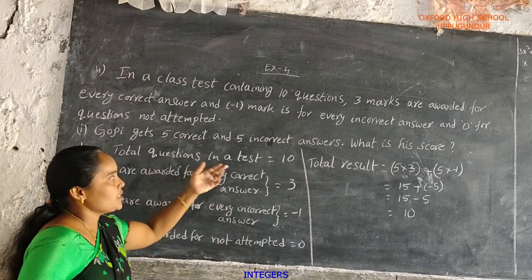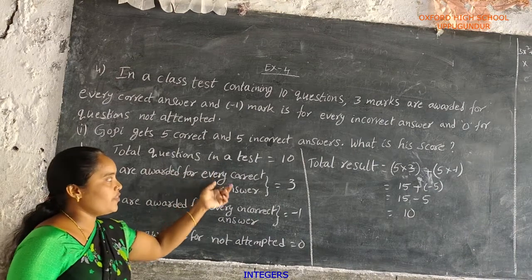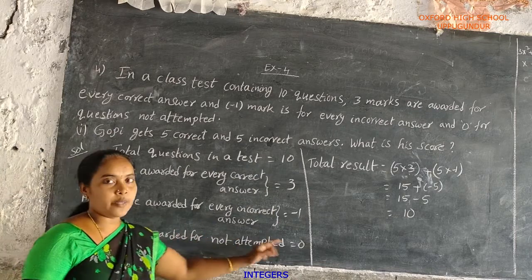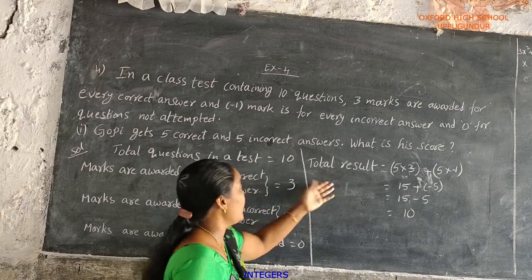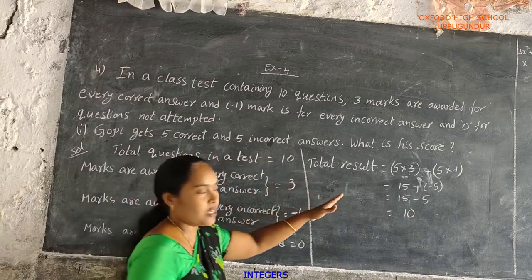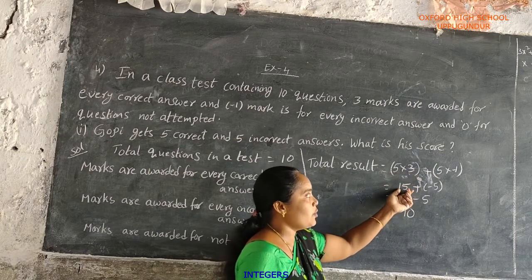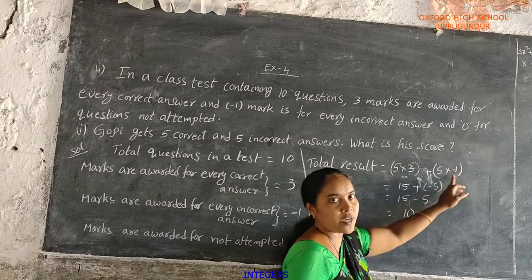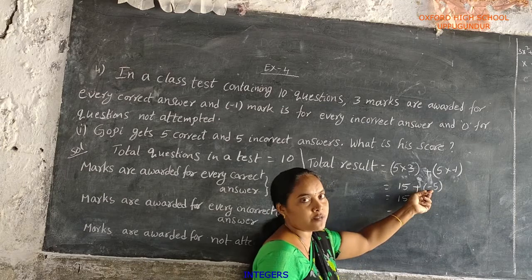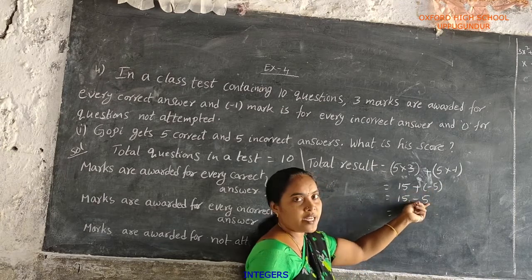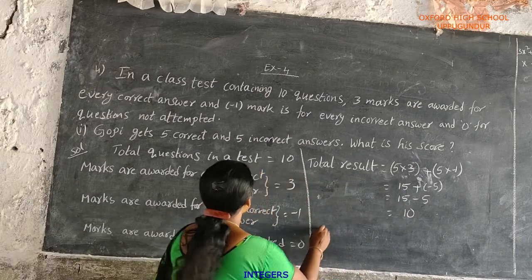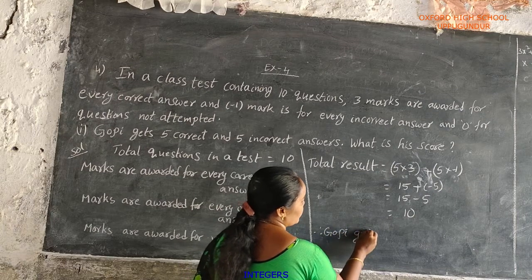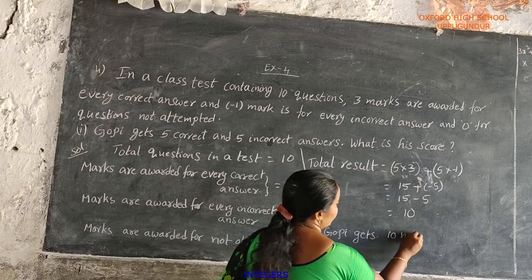Once again: total questions in a test is 10. Marks for every correct answer: 3. Marks for every incorrect answer: minus 1. Marks for not attempted: 0. Gopi gets 5 correct and 5 incorrect answers. Total result equals 5 into 3 plus 5 into minus 1 equals 15 minus 5 equals 10. Therefore, Gopi gets 10 marks.